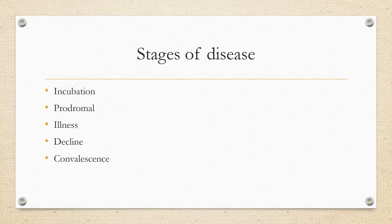The stages of disease include: incubation, the interval between infection/exposure and first symptoms, also known as the latent period; prodromal period, the initial stage generally between initial symptoms and acute illness; the illness stage, when acute sickness arises; decline, a progressive decrease in acute symptoms; and the convalescent stage, when you are recovering from the disease.